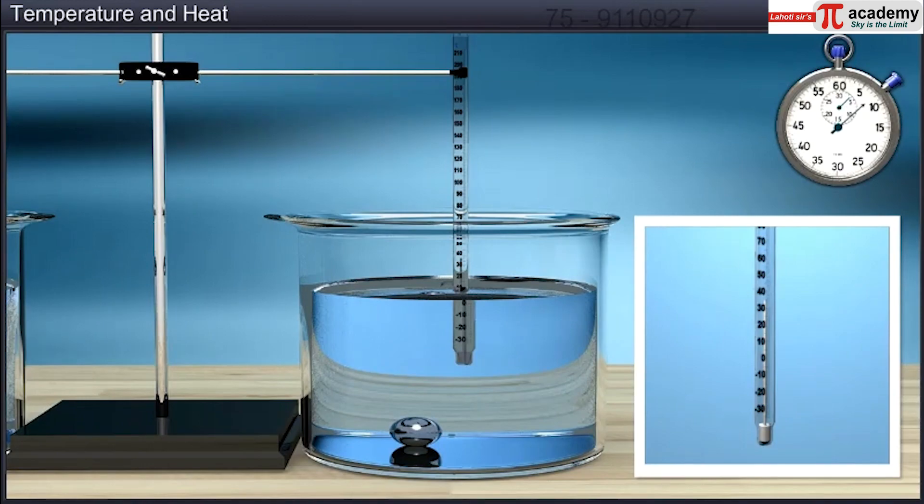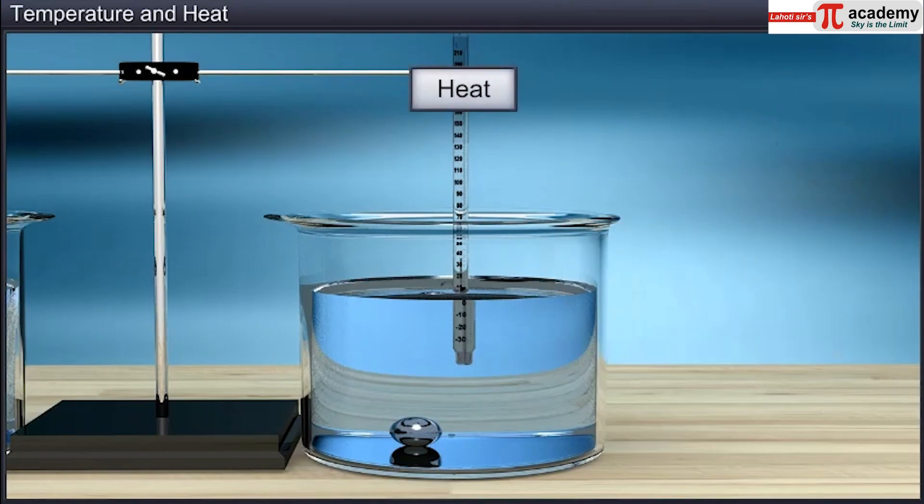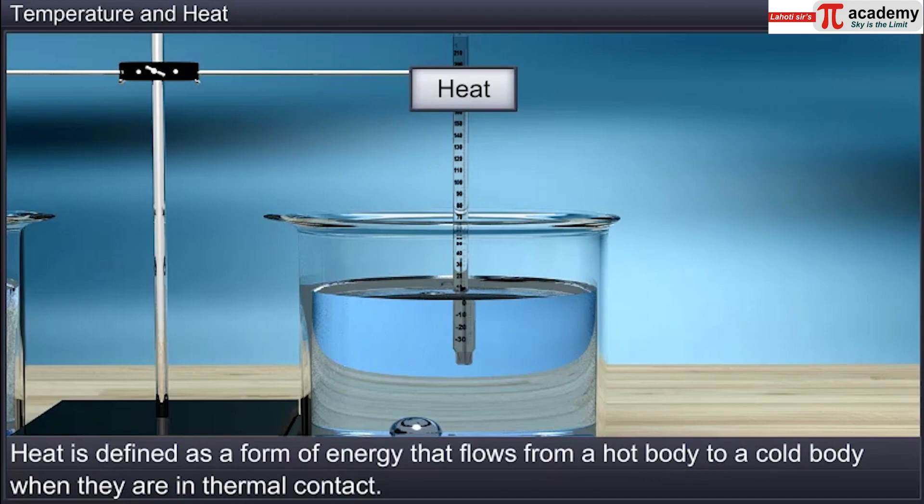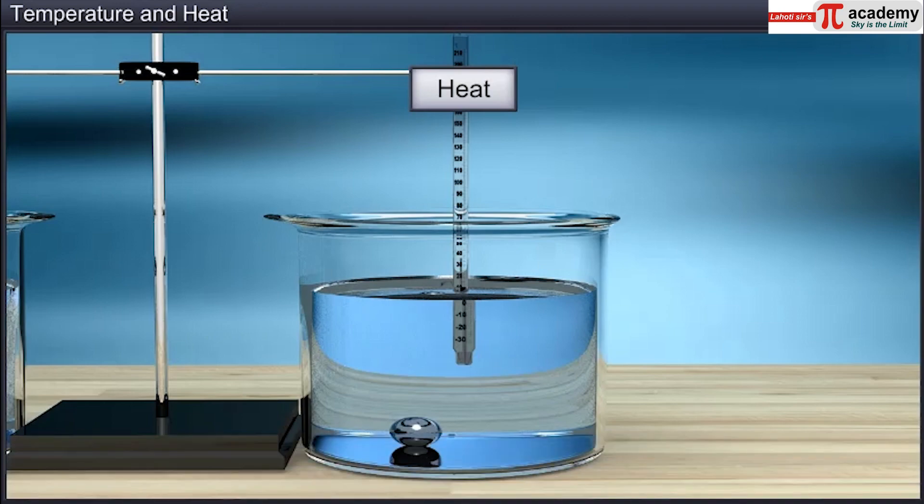Before we continue, let us define heat. Heat is defined as a form of energy that flows from a hot body to a cold body when they are in thermal contact. Heat is an energy that is in transit. Here, the heat flows from the iron ball to the cold water.